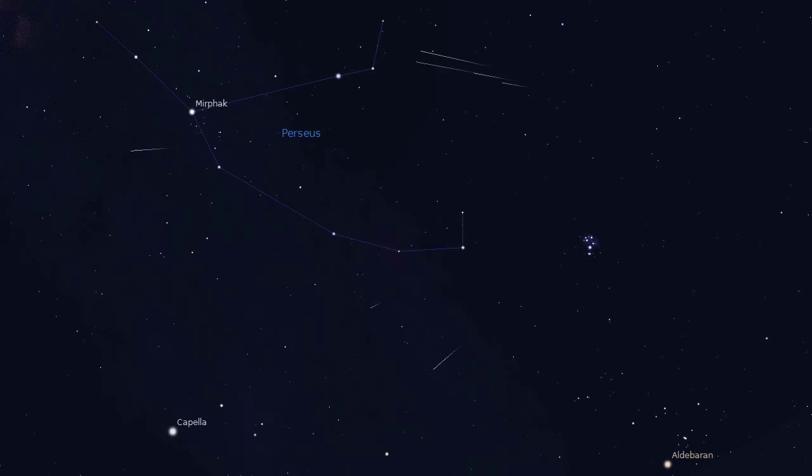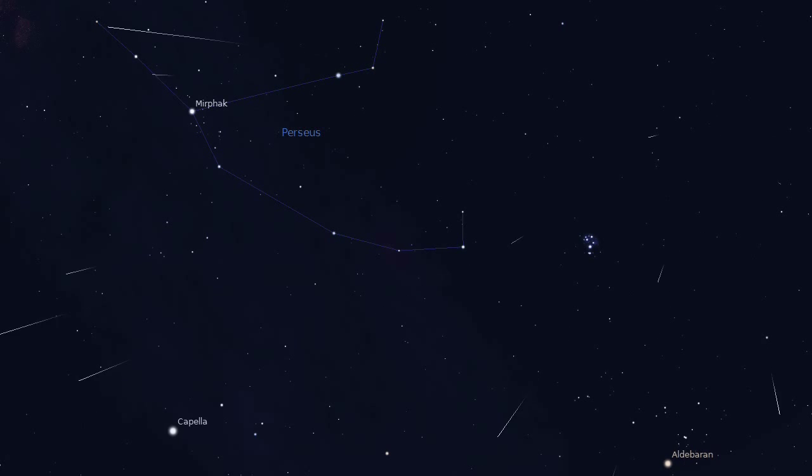Meteors are pebble-sized pieces of space debris that fall through the Earth's atmosphere and burn up in a few seconds. They ignite a bright trail of light across the sky. Look up on any night and you might see two to three meteors per hour.